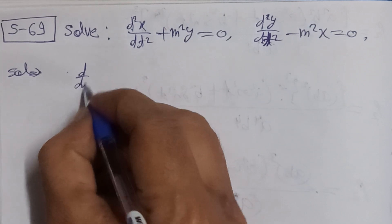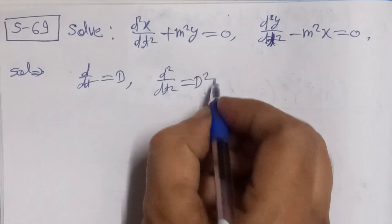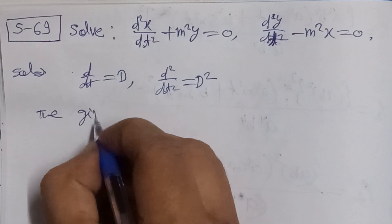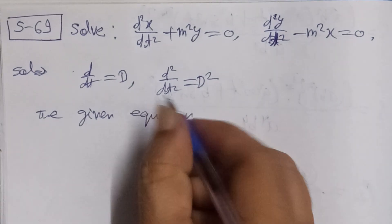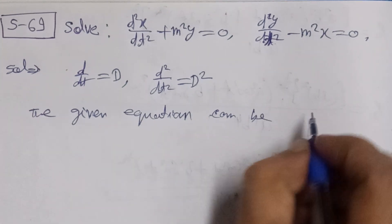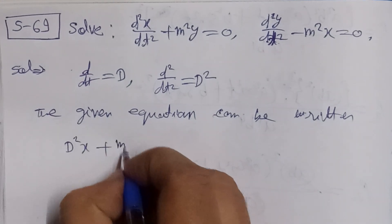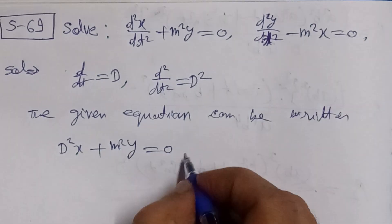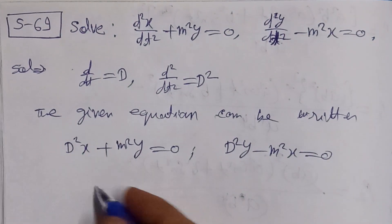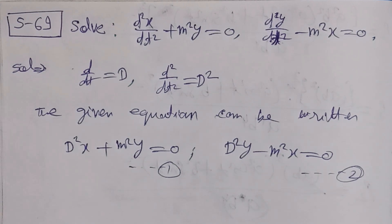We will denote d/dt by capital D. The given equations can be written as: D²x + m²y = 0 (equation 1) and D²y − m²x = 0 (equation 2). We need to solve these two equations.